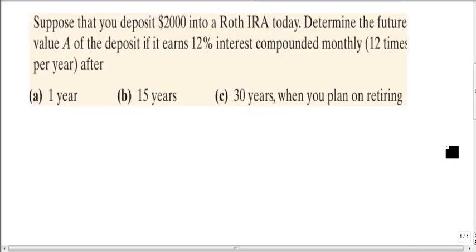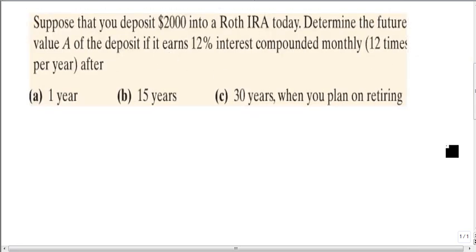So let's use this in a particular problem. Here is an example of a compound interest problem. Suppose that you deposit $2,000 into a Roth IRA. Determine the future value A if the deposit earns 12% interest compounded monthly, which is 12 times per year, after (a) 1 year, (b) 15 years, and (c) 30 years when you plan on retiring. So the first thing we need to do is identify our values. Here's P, here's r, here's n.